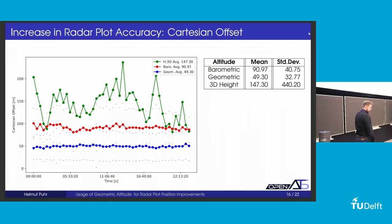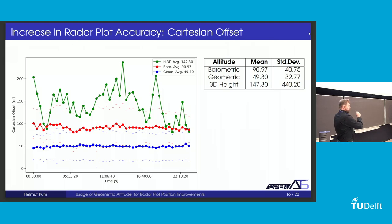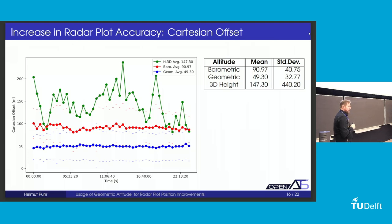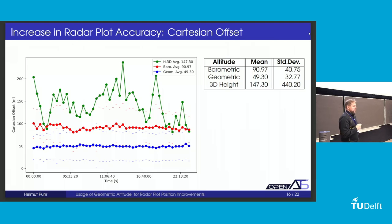In the data set, we had a single radar that also gave us 3D altitude information. For each of the radar plots, we calculated three different positions using the slant range correction with three different altitudes: the barometric one, the reconstructed geometric one, and the 3D height as measured by the radar. We then compared these three positions to tracker reference positions — interpolated ones from the operational ATC tracker in Austria. The results are shown in this graph. We have three different Cartesian offsets: in red the barometric, in blue the reconstructed geometric, and in green the 3D height. The Cartesian offset is on the y-axis in meters, with 30-minute intervals on the x-axis.